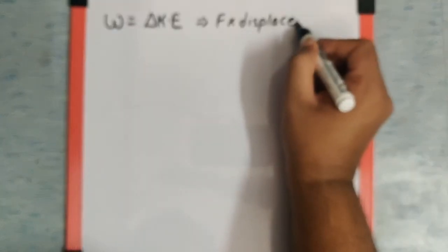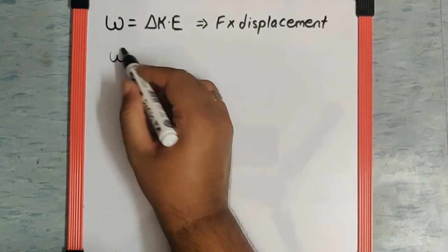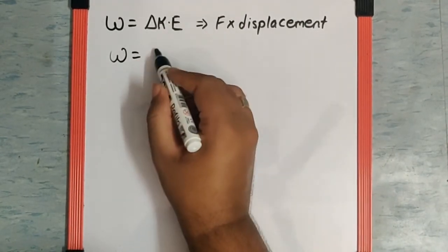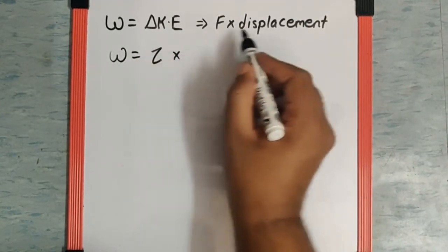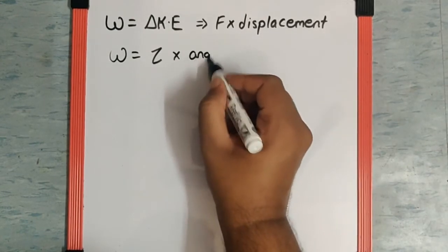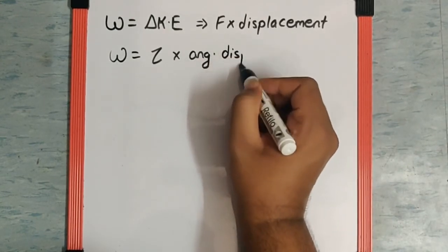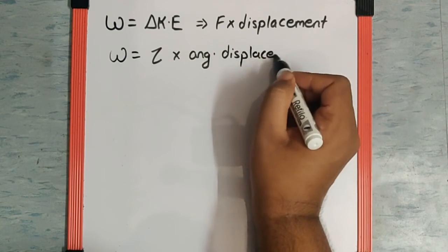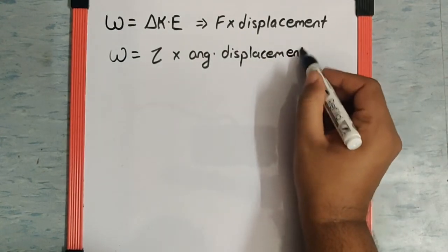But this is applicable for linear motion. Now since this is a rotational motion we can say work is equal to instead of force we will have torque and instead of displacement we will have angular displacement which is definitely known as theta.